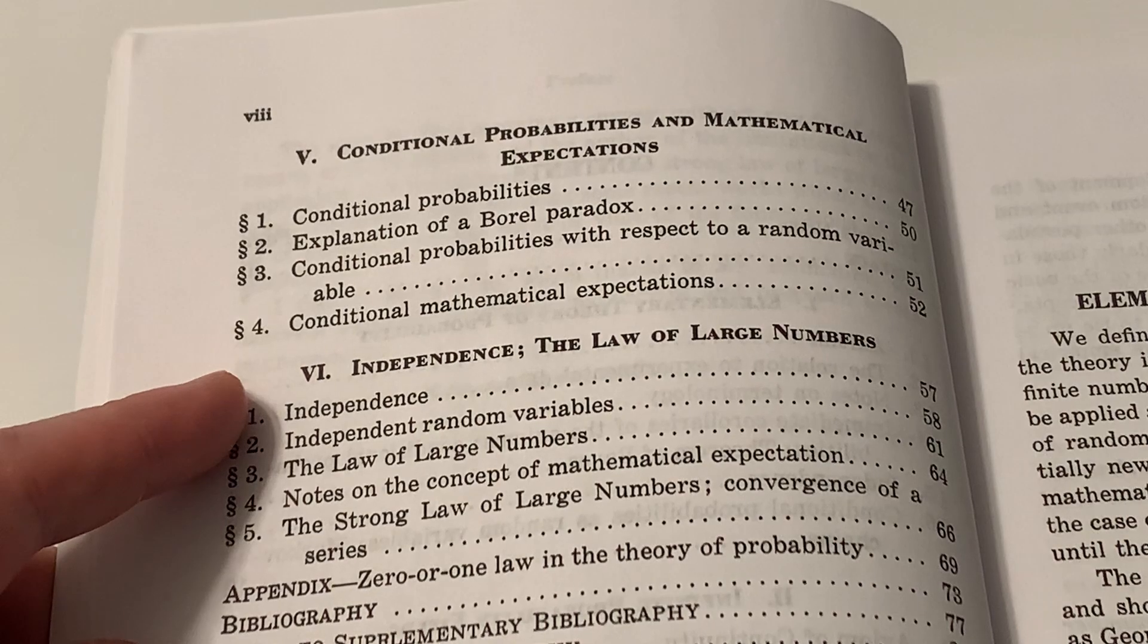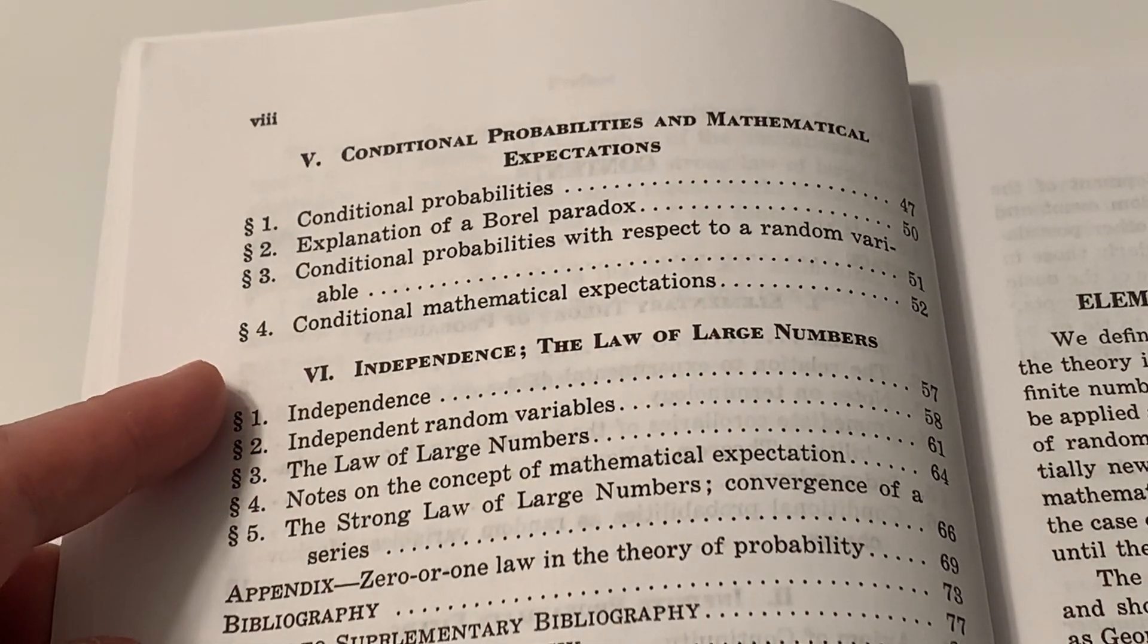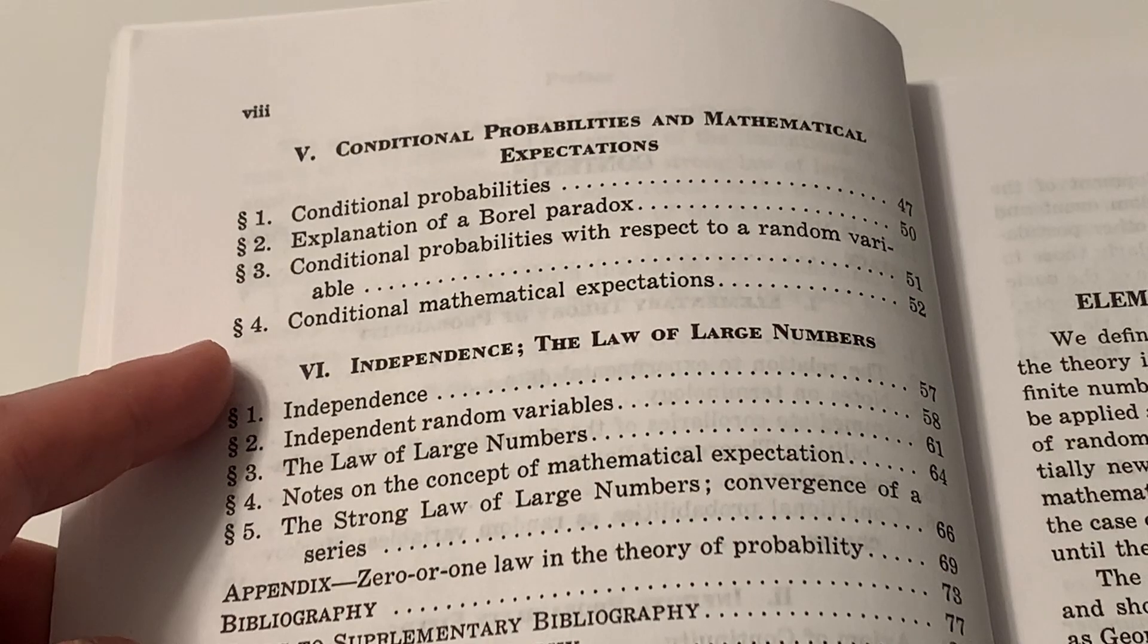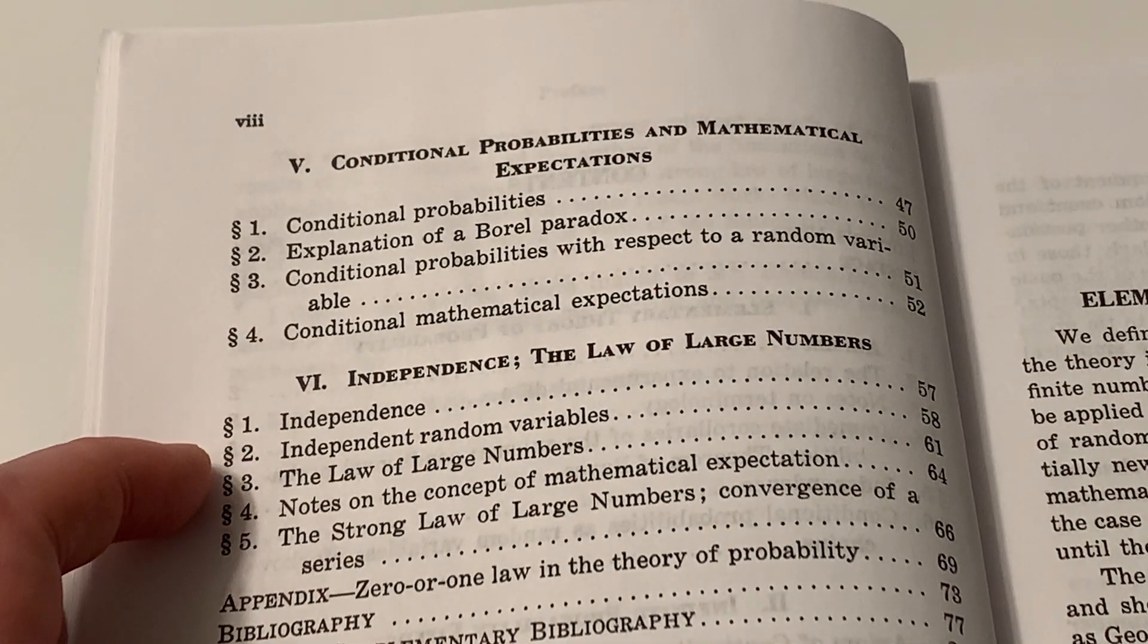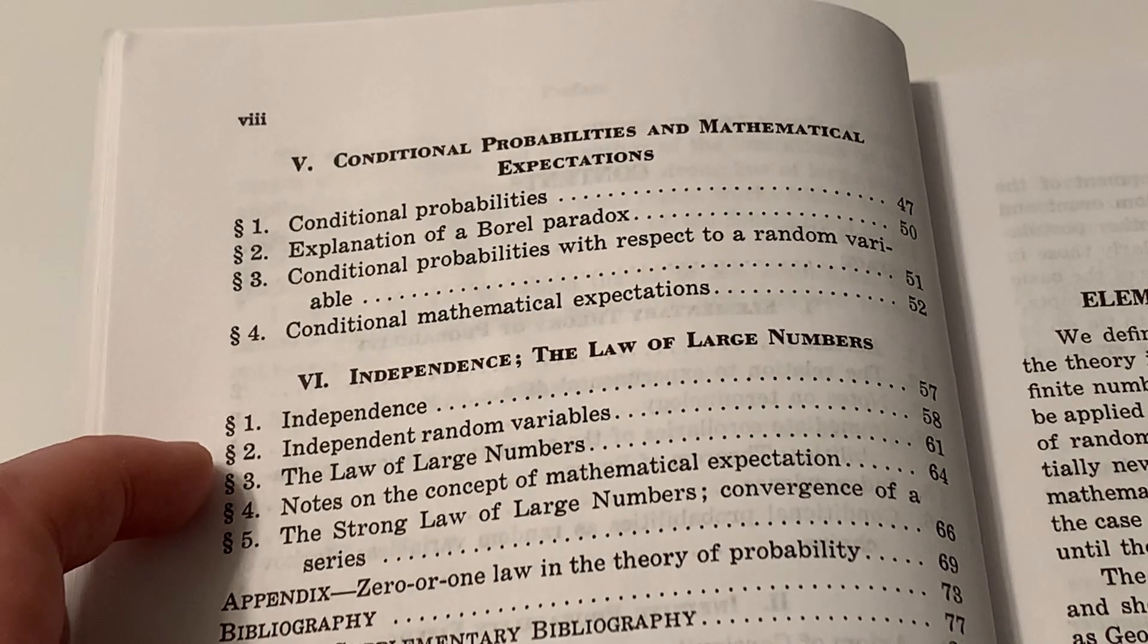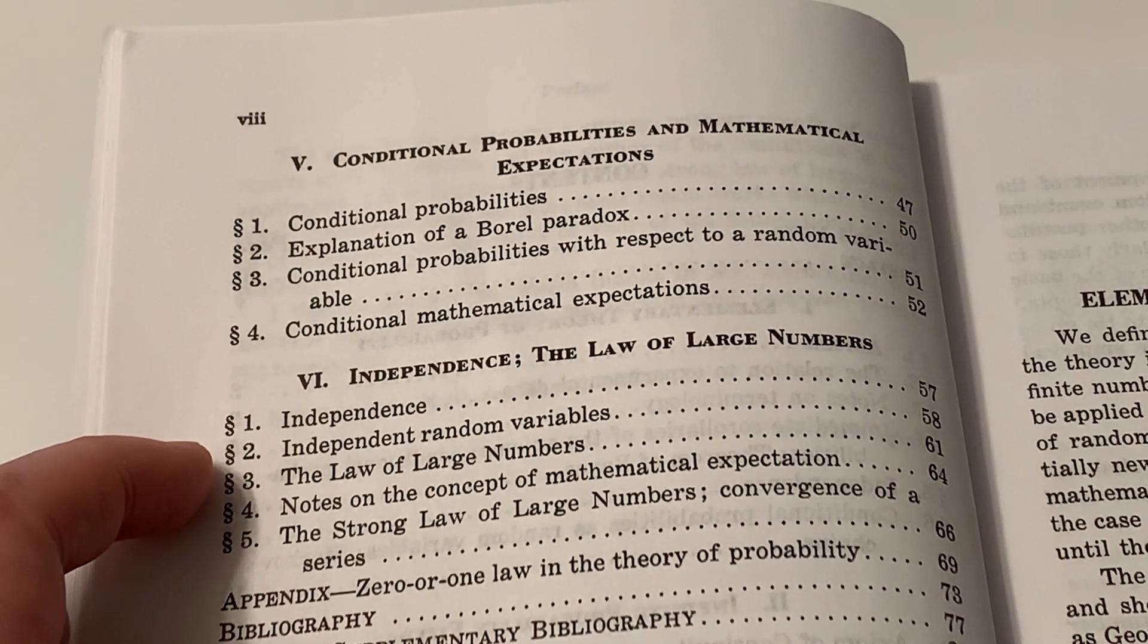In the last chapter, independence, the law of large numbers, is the culmination of this work. So the first five chapters can be seen as motivation and definitions. Kolmogorov showed that the classical results of probability theory can now be deduced from those axioms. This is a remarkable achievement.